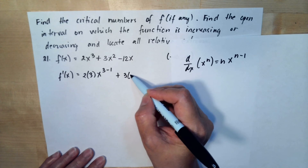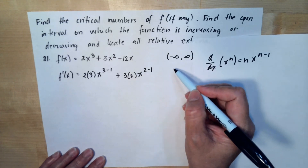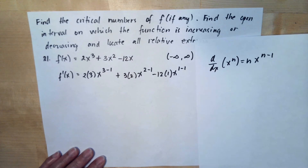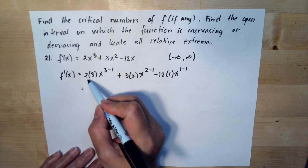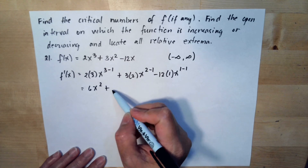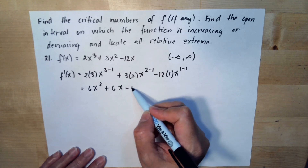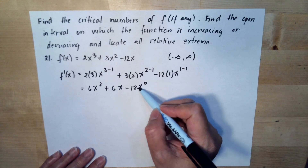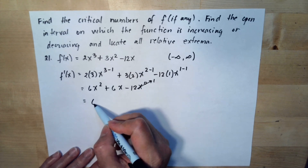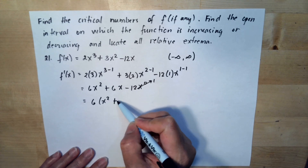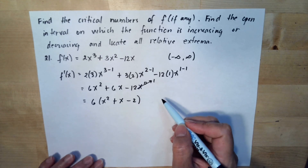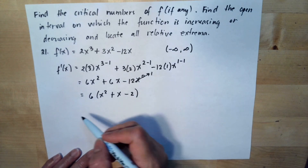Continuing, we have plus 3 times x to the 2 minus 1, minus 12 times x to the 1 minus 1. Simplifying: 2 times 3 is 6x squared, plus 3 times 2 is 6x, minus 12x to the 0. Anything raised to 0 is 1, so we have a common factor of 6. Factoring out 6 gives us x squared plus x minus 2, so the derivative is 6(x squared plus x minus 2).